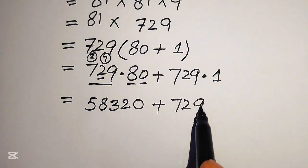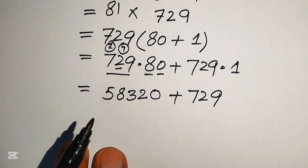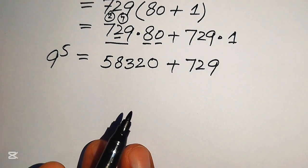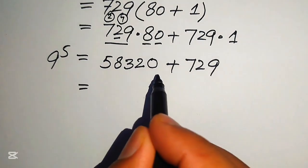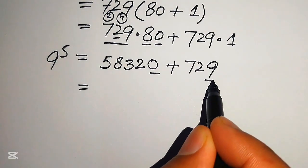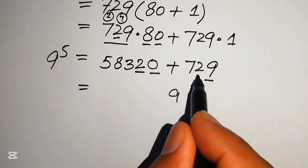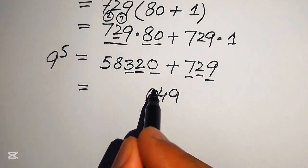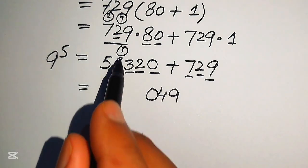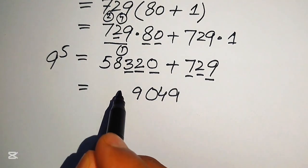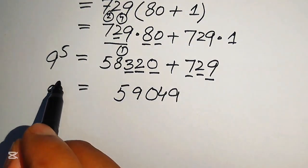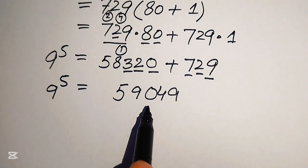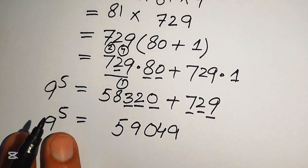Now we add 58,320 and 729: 0 + 9 = 9; 2 + 2 = 4; 3 + 7 = 10, write 0 carry 1; 8 + 1 = 9; and 5 remains. So the value of 9 to the power of 5 equals 59,049.